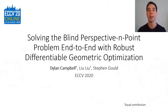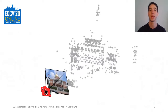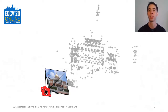Hello, I am Dylan Campbell. Welcome to my talk on solving the blind perspective endpoint problem end-to-end. Blind PnP is the problem of estimating the camera pose from which a set of 2D points were viewed, relative to a 3D point set, without prior knowledge of the 2D-3D correspondences.